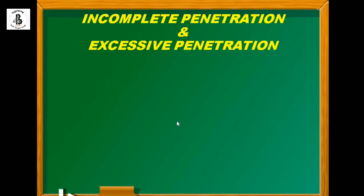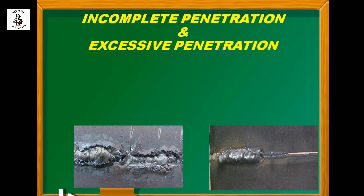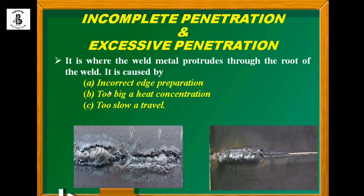The next defect is incomplete penetration or excessive penetration. You can see incomplete penetration on one side and excessive penetration on the other. Excessive penetration is where the weld metal protrudes through the root of the weld, caused by incorrect edge preparation, too high a heat concentration, and too slow a travel speed.